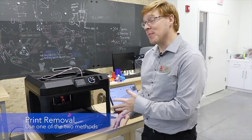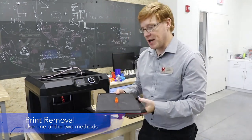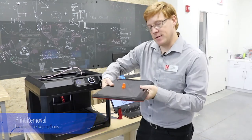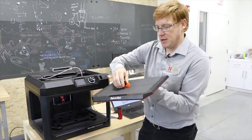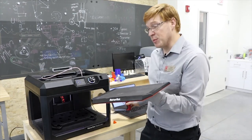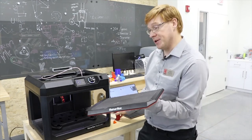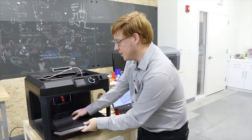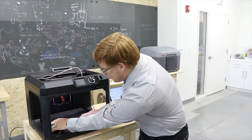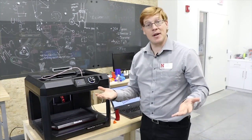Now you'll notice that our print has finished. So we easily pull the tray off, and we can flex the tray to loosen our print and pop it off. In the case that it is a little more difficult, we do have the spatula here to help remove the material. Once we have it off of our plate, we can reinsert and snap in the build plate. Now we're ready for our next print job.